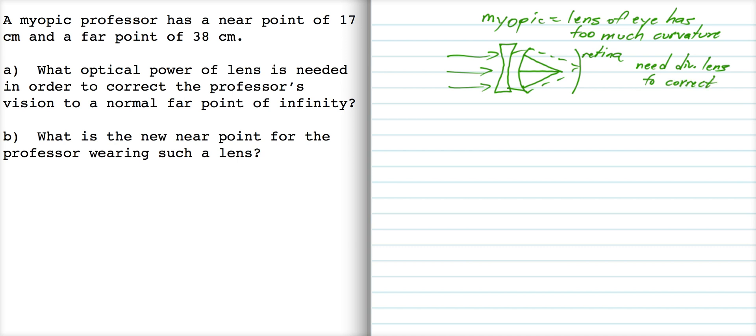The idea is that the diverging lens will take an object out here at infinity and create an image at the person's far point, at the normal far point for the eye. Okay, so that for the eyeball here, the eyeball is going to think that the object is here.